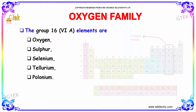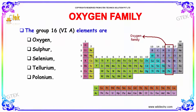In the periodic table, Group 16 — also called Group 4A — elements are called the Oxygen family, consisting of Oxygen, Sulphur, Selenium, Tellurium, and Polonium.